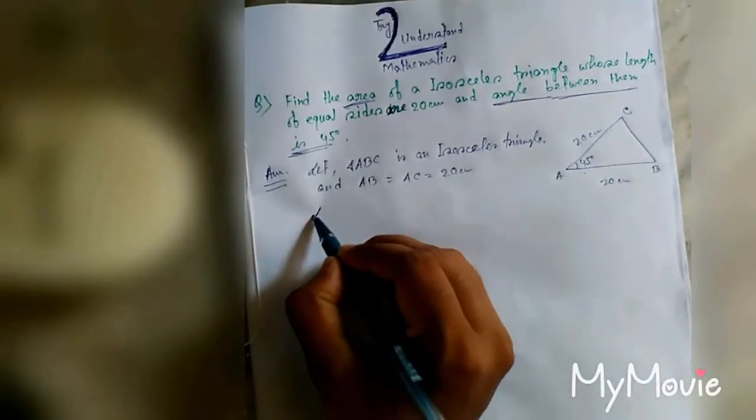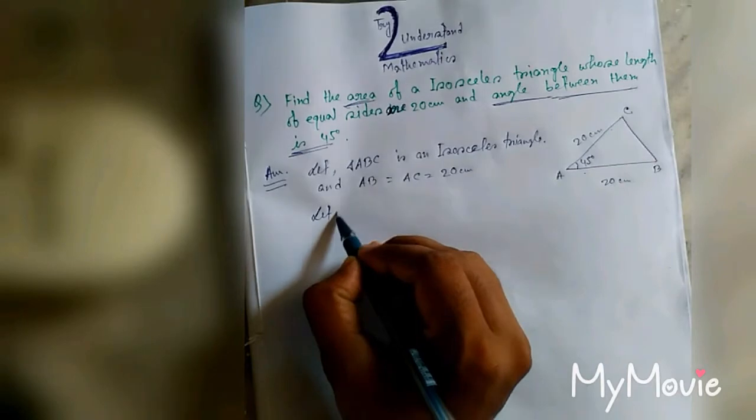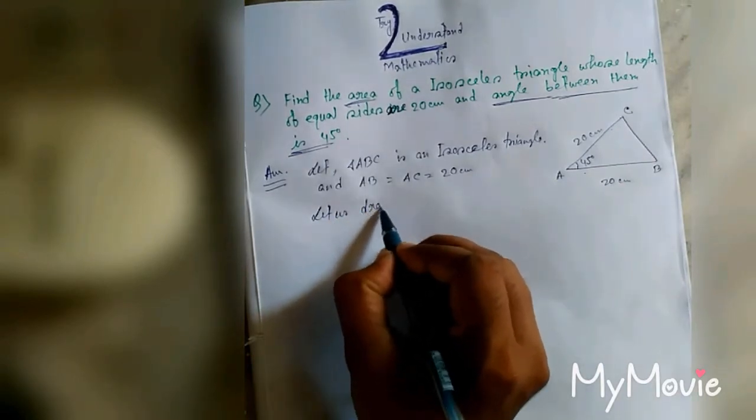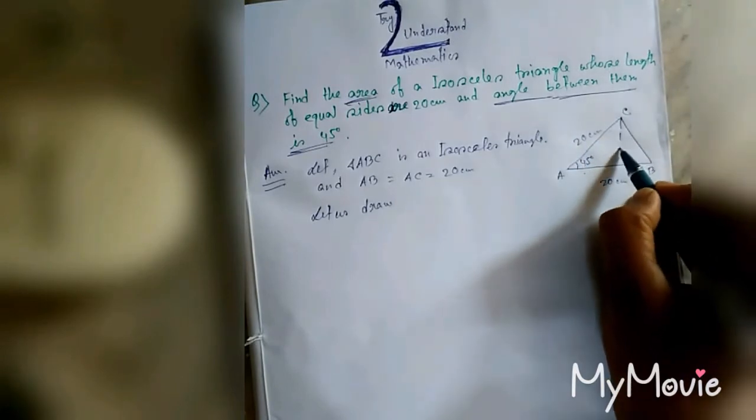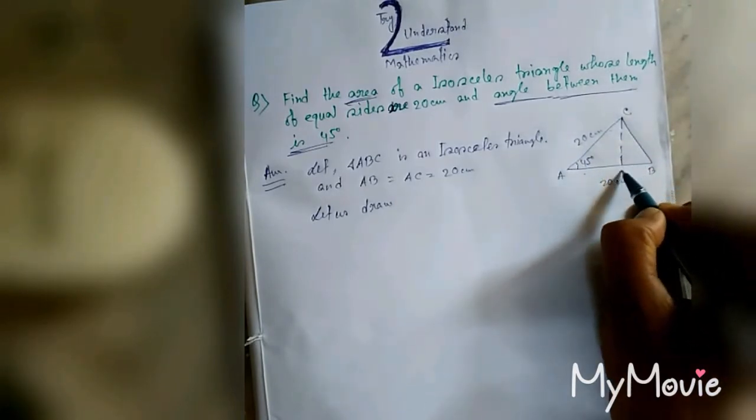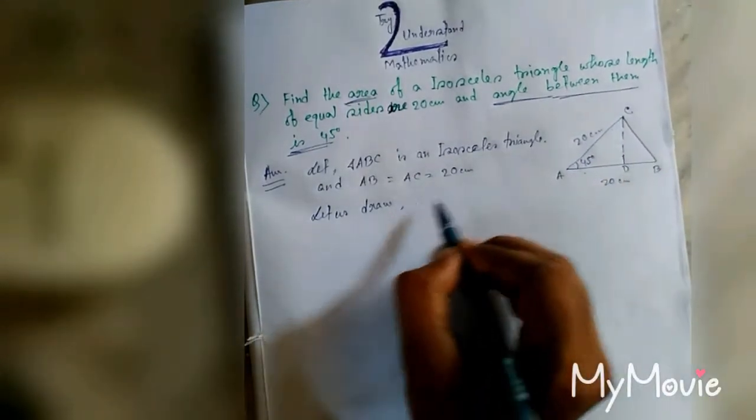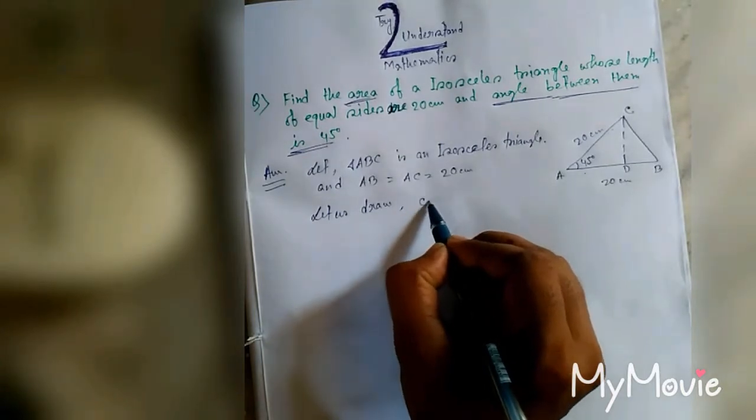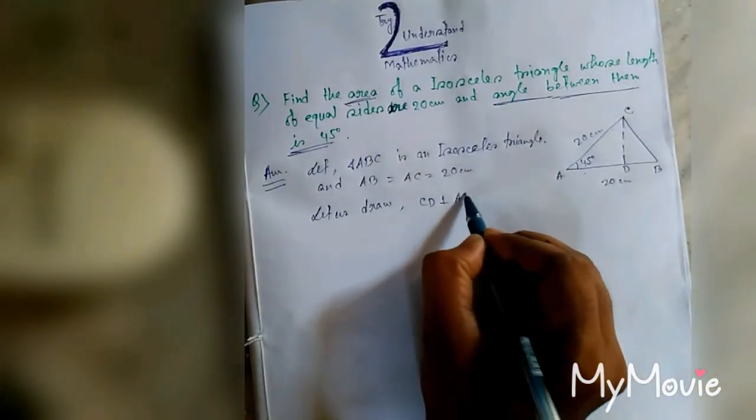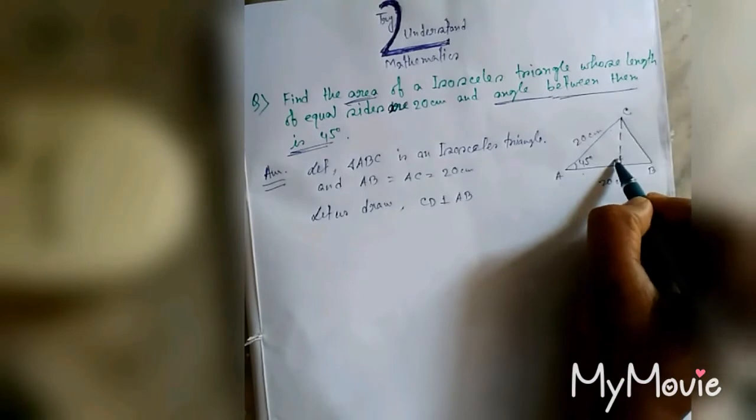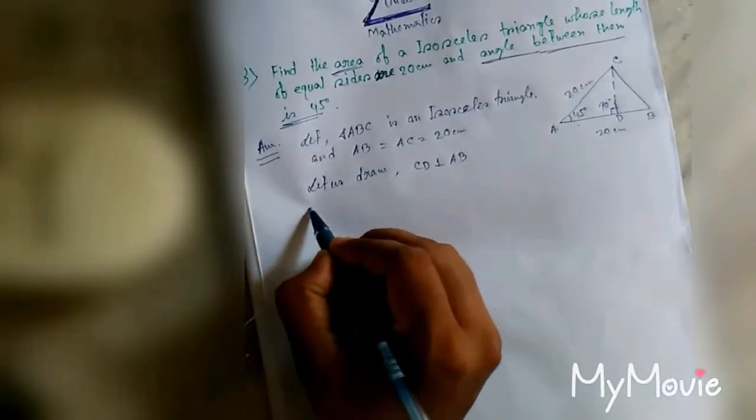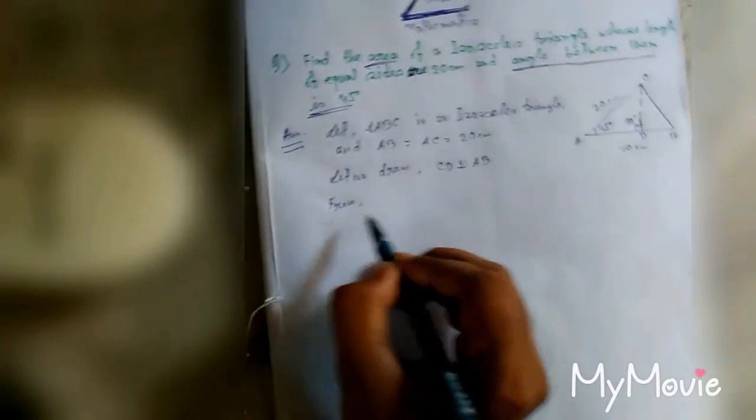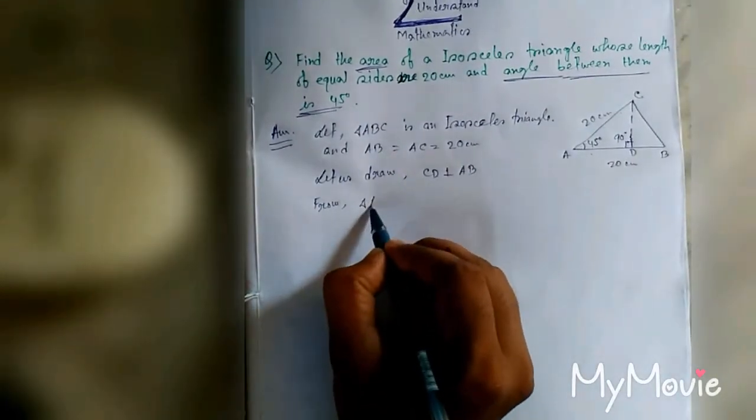So let us draw a perpendicular from C to base AB. This point is D. So CD perpendicular AB. So this angle is obviously 90 degrees from triangle ACD.